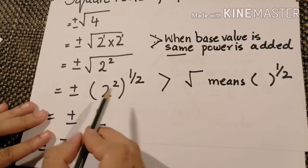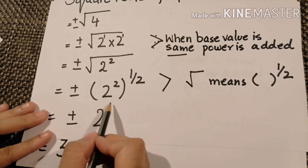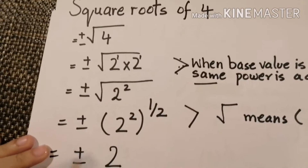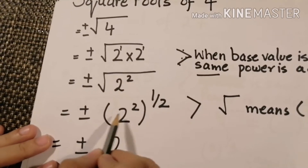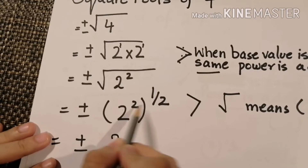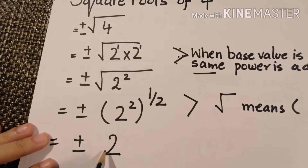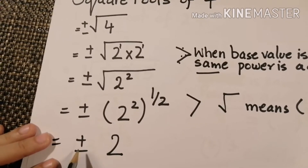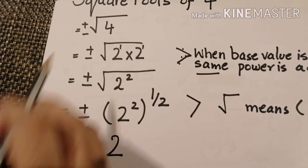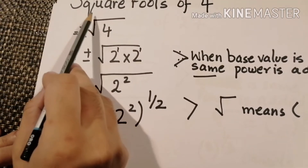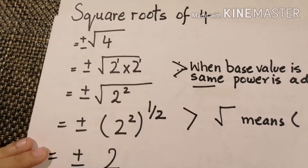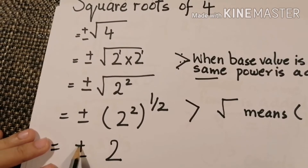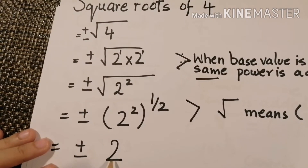To solve it, we will cancel the power 2 with the 1 by 2 and we will have only plus minus 2. So in the case of square roots of 4, the answer is plus minus 2.